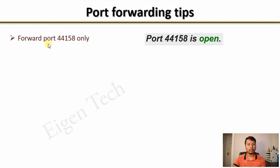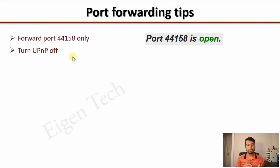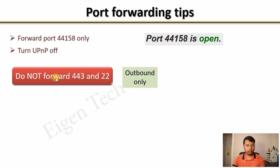Forward port 44158 only, and you should turn off UPnP — Universal Plug and Play — because it sometimes interferes with your settings. However, if you didn't turn it off and your Helium Hotspot is not relayed, you don't need to worry about it. But if it is relayed and you are performing port forwarding, you should turn that setting off. Also, do not port forward ports 443 and 22 — these are required for outbound traffic only, and by default outbound traffic is always open through your router.